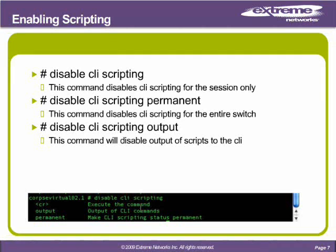Now we're looking at the opposite commands: disable CLI scripting, disable CLI scripting permanent, and disable CLI scripting output. Disable CLI scripting is session-based — you can disable it for the current session just as quickly as you enabled it. Disable CLI scripting permanent disables it for all sessions switch-wide. Disable CLI scripting output disables the CLI scripting output.